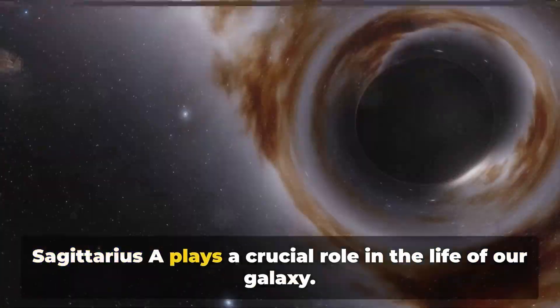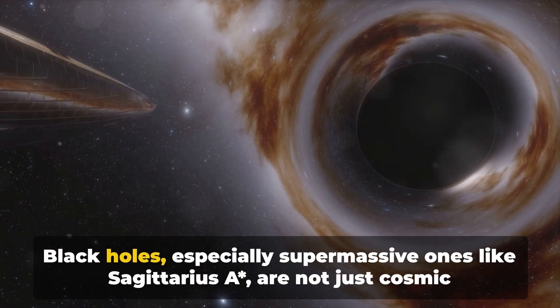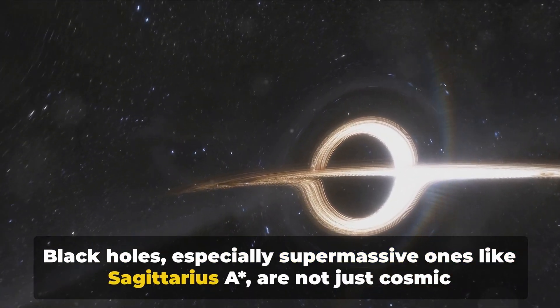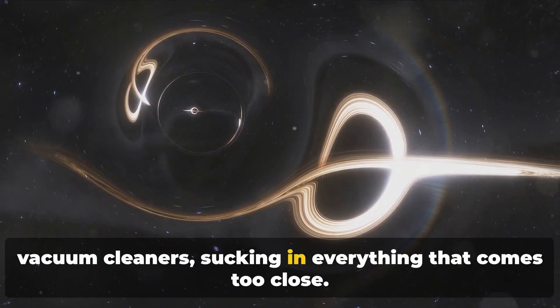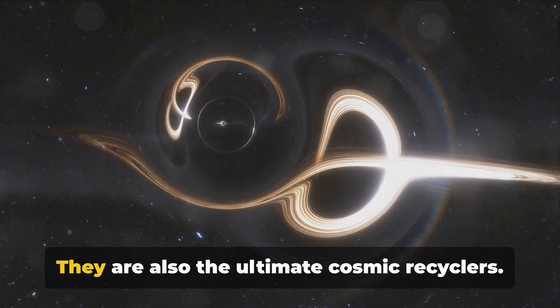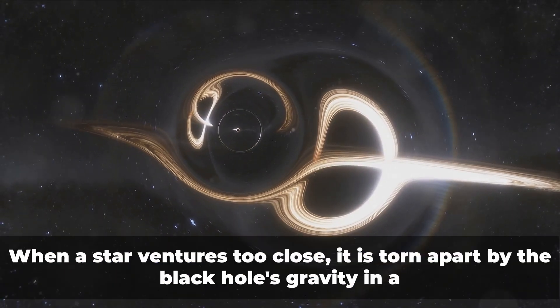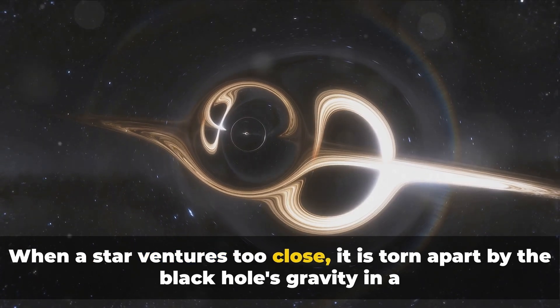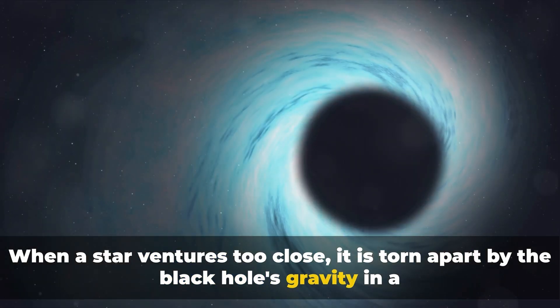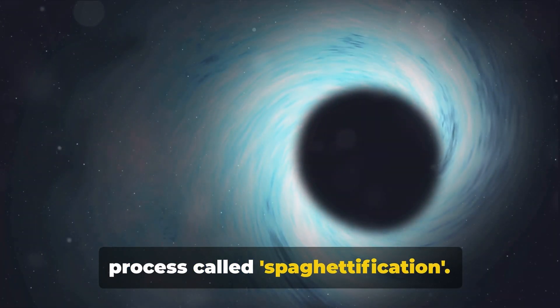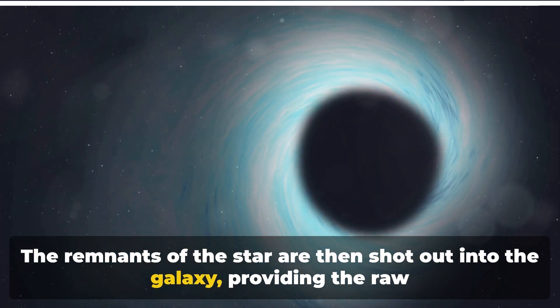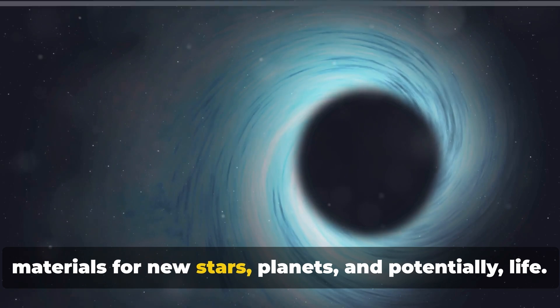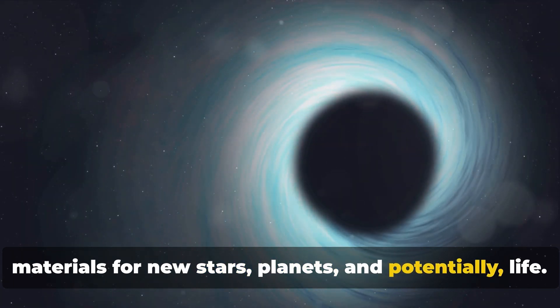Sagittarius A plays a crucial role in the life of our galaxy. Black holes, especially supermassive ones like Sagittarius A asterisk, are not just cosmic vacuum cleaners sucking in everything that comes too close. They are also the ultimate cosmic recyclers. When a star ventures too close, it is torn apart by the black hole's gravity in a process called spaghettification. The remnants of the star are then shot out into the galaxy, providing the raw materials for new stars, planets, and potentially, life.